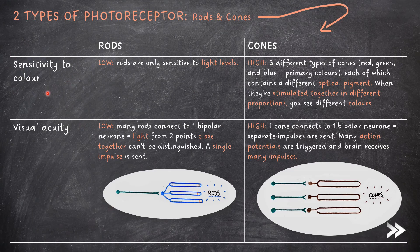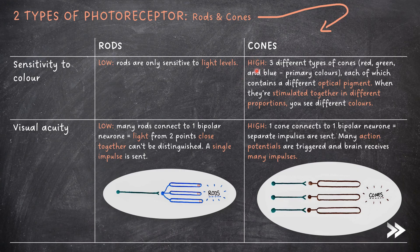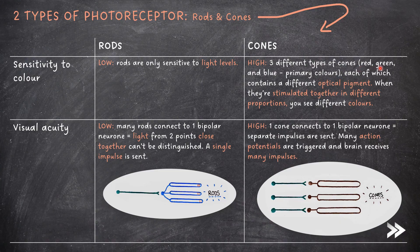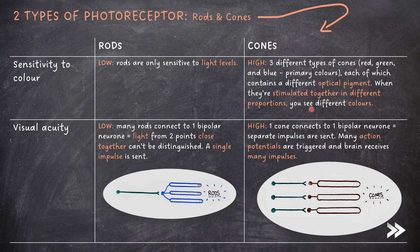Next, we have sensitivity to colour. Rods have a low sensitivity to colour, as rods are only sensitive to light levels. Cones, on the other hand, have a high sensitivity to colour. There are three different types of cones, one for each of the primary colours: red, green, and blue, each of which contain a different optical pigment. When they are stimulated together in different proportions, you see different colours.